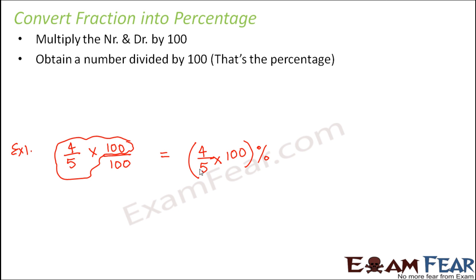And then you calculate this value. So 5 2 is a 10 0, 4 into 20 is 80, so this is 80 percent. So this is how you convert a fraction into percentage. So let us look at more examples.